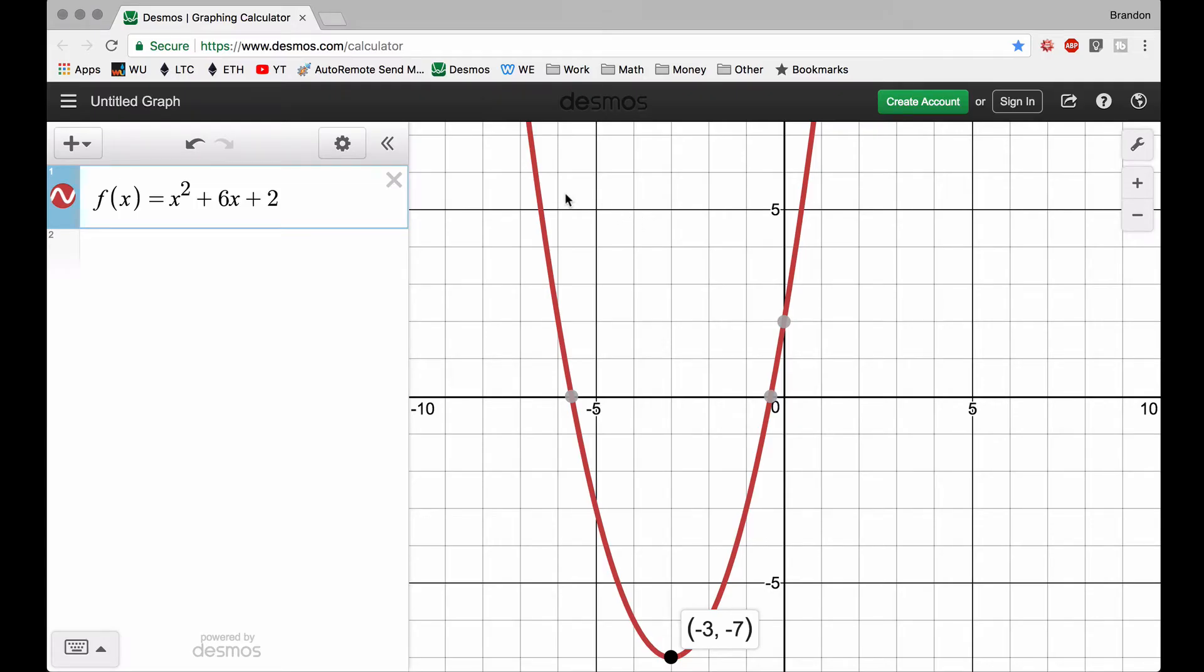And here we are inside of Desmos with the same f(x) curve and we have our vertex down here of (-3, -7). And what I want you to notice is for values of x on the left side of -3, for all these values of x here, the function is going down from left to right, hence it's decreasing. And then on the right side of -3, it is increasing.